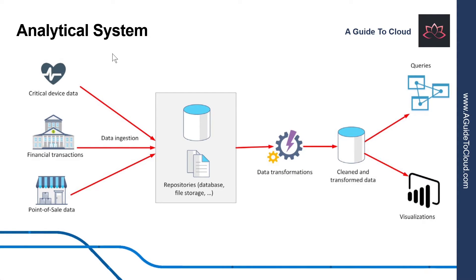Now let's understand what is an analytical system. In contrast to a system designed to support OLTP, an analytical system is designed to support business users who need to query data and gain a big picture view of the information held in a database. Analytical systems are concerned with capturing raw data and using it to generate insights that an organization can use to make business decisions. Most analytical data systems need to perform similar tasks: data ingestion, data transformation, data querying, and data visualization.